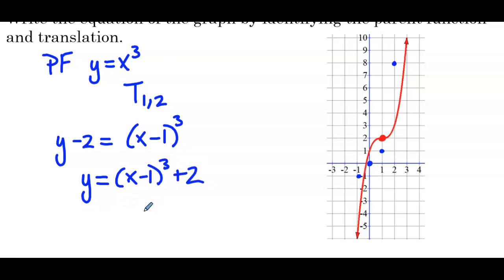To reiterate: the equation is always telling us how to get from the red graph back to the parent function — it intuitively says left 1, down 2 — and we reverse it so that given points on the parent function, we can create the translated red graph.